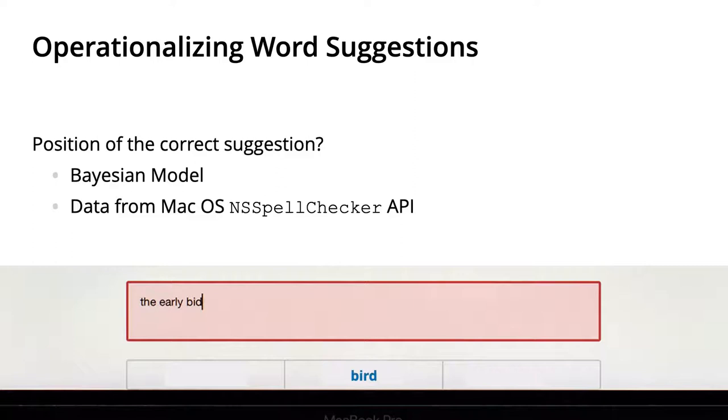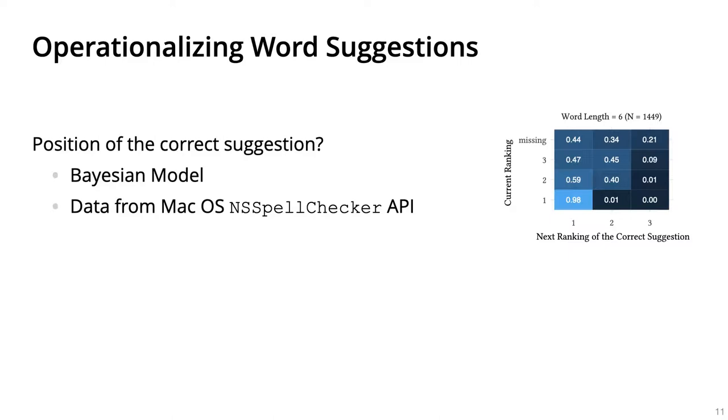But we also needed to control the position of the correct suggestion out of the three that are shown to participants. To do this, we built a Bayesian model using data gathered from macOS.